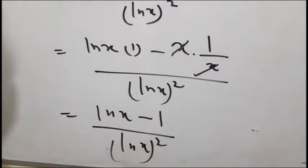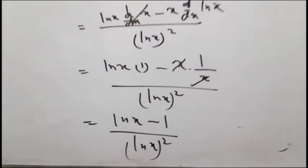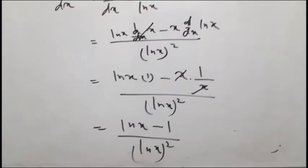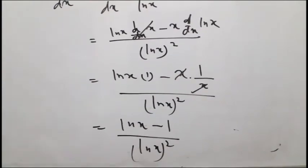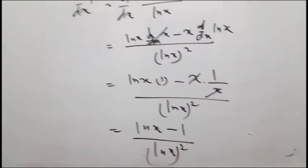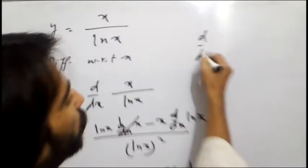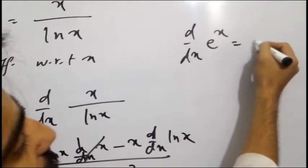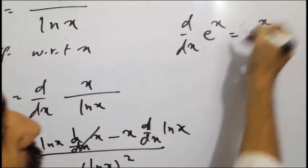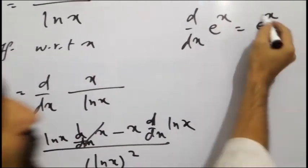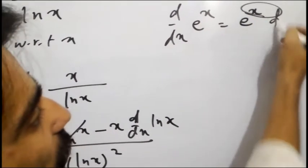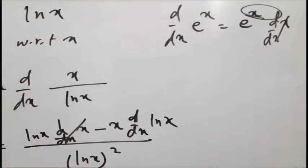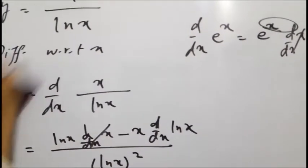तो यह इस तरह से सवाल solve हो जाएगा। Next में चलते हैं — exponential functions। exponential function में क्या होता है, जब भी हम derivative किसी exponential का find करते हैं: derivative of e raised to power x तो इसका e raised to power x ही derivative आ जाएगा। फिर जो इसकी power दी गई होगी, उसका दुबारा से derivative find किया जाता है।